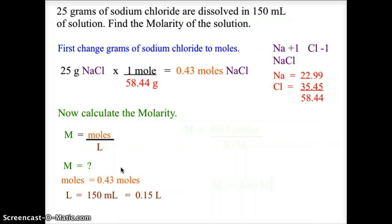we take 150 milliliters and convert it to 0.15 liters by moving the decimal three places to the left, which is dividing by 1,000. Plugging in the values, molarity equals 0.43 moles divided by 0.15 liters, giving us a final value of 2.86 molar.